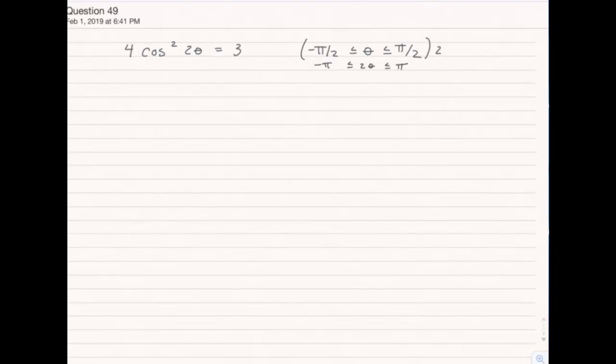So first thing we get the cosine by itself, and then we're going to take the square root of both sides using the square root property. We won't forget that we have to do plus and minus when we use the square root property, and that seems vaguely familiar to me.